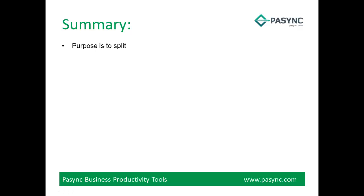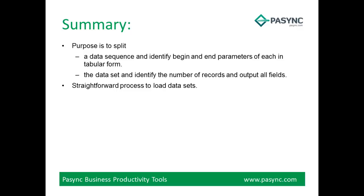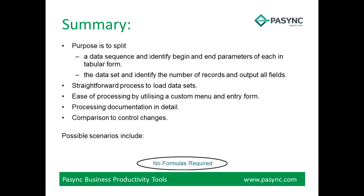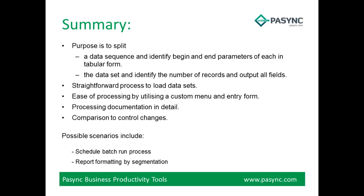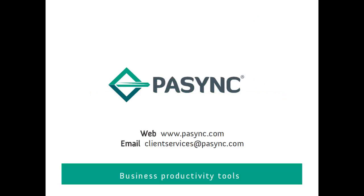In summary, the purpose is to split a data sequence and identify begin and end parameters of each in tabular form, and to split the data set and identify the number of records and output all fields. It is a straightforward process to load data sets, with ease of processing by utilising a custom menu and entry form, processing documentation in detail and comparison to control changes. Possible scenarios include schedule batch run processes, report formatting by segmentation, allocate lists to distribute and process, and determine data set extract records. A comprehensive manual, test scripts and trial programs are available from our website. This video is proudly presented by the team at PassInc.com.